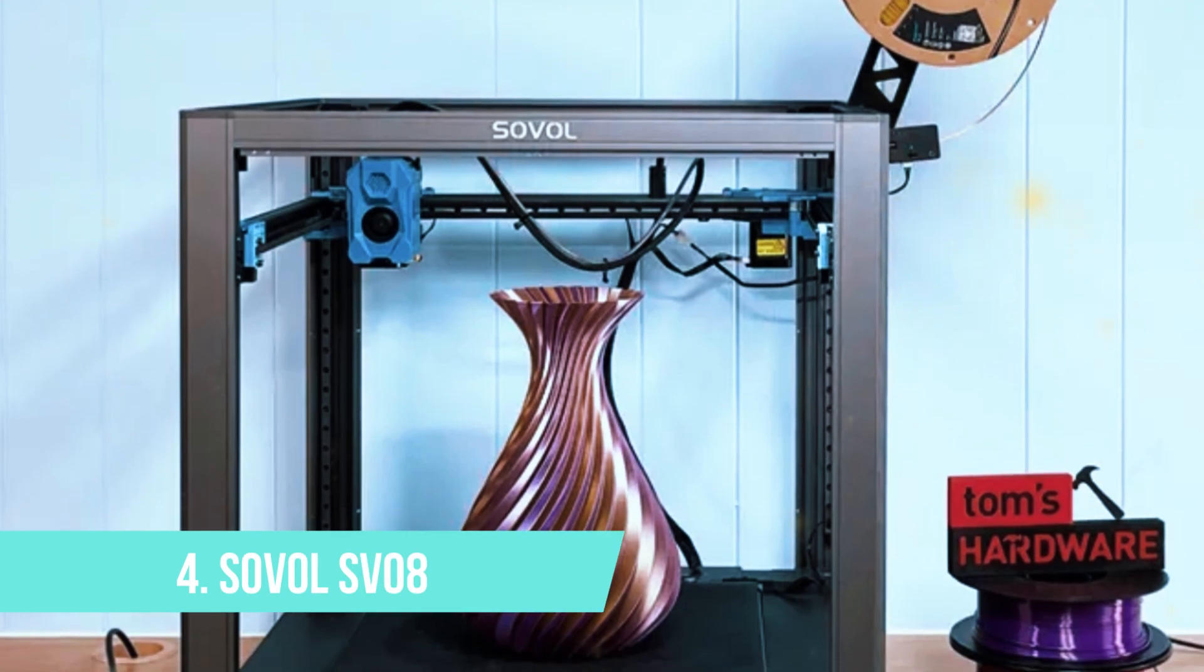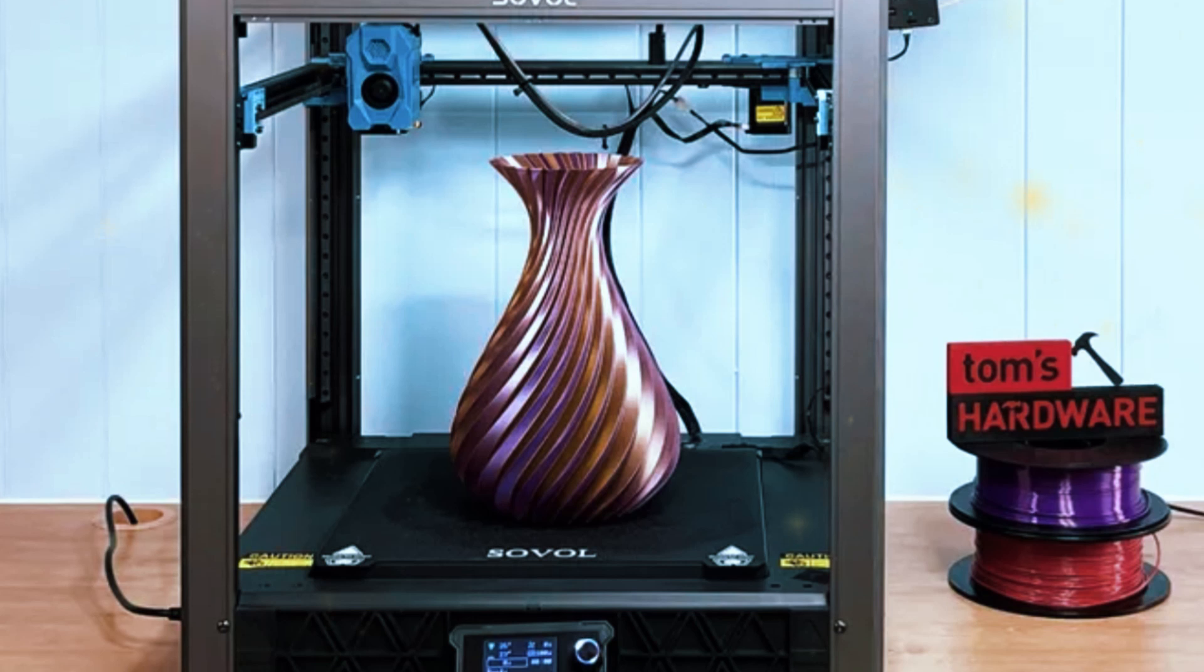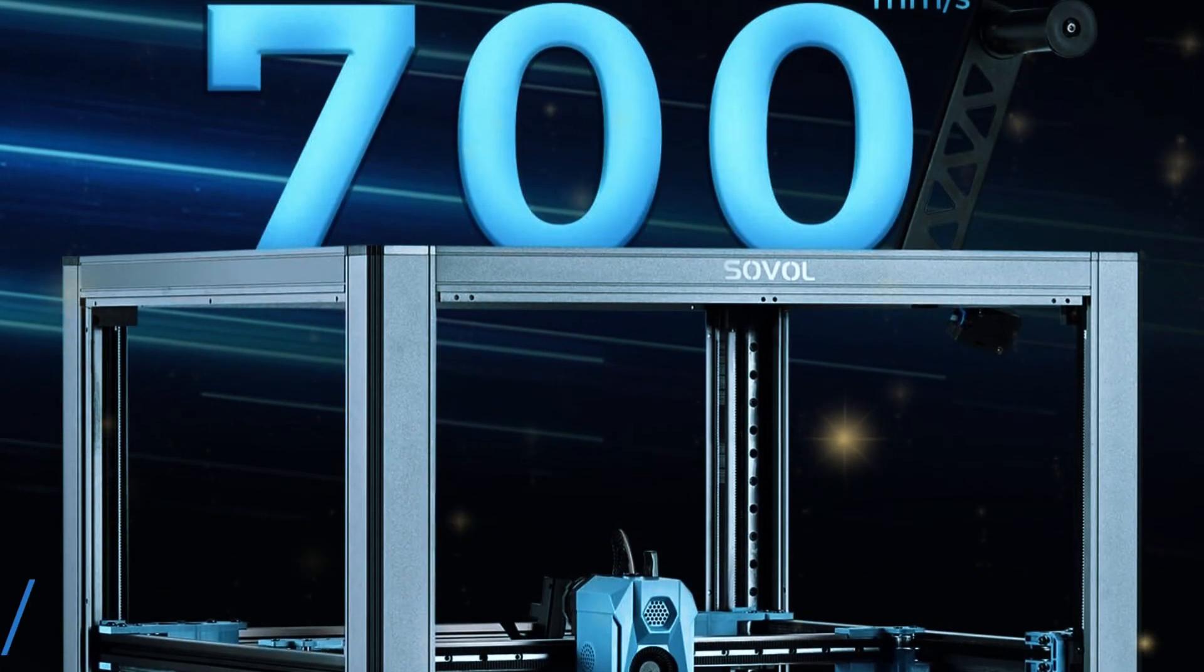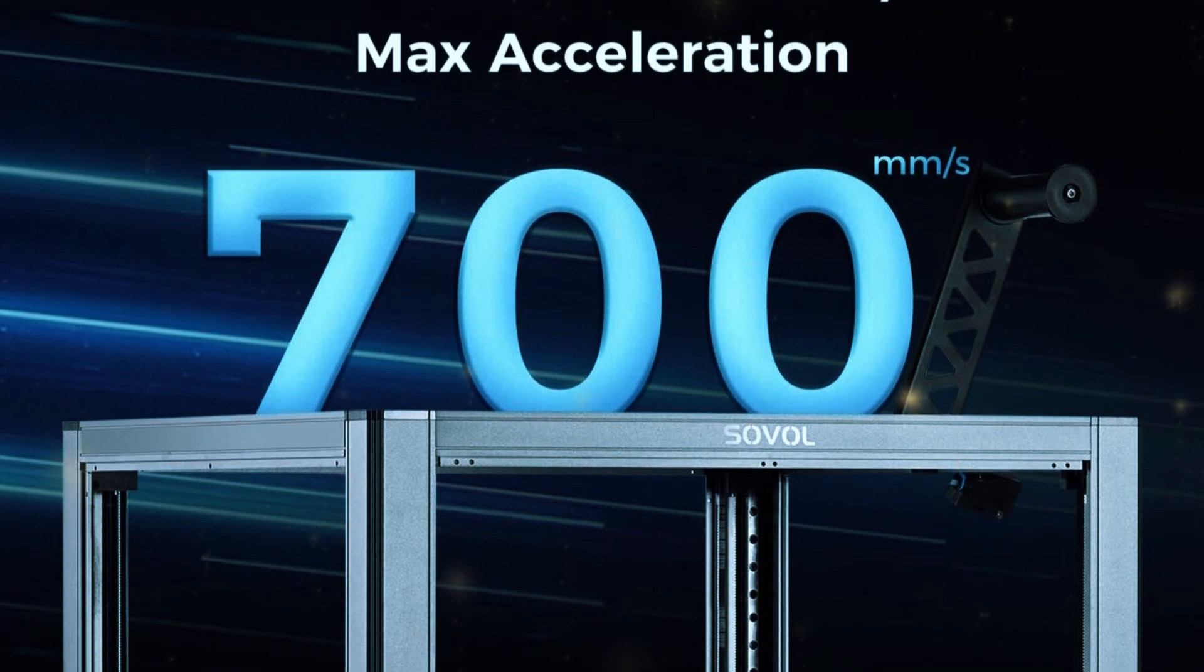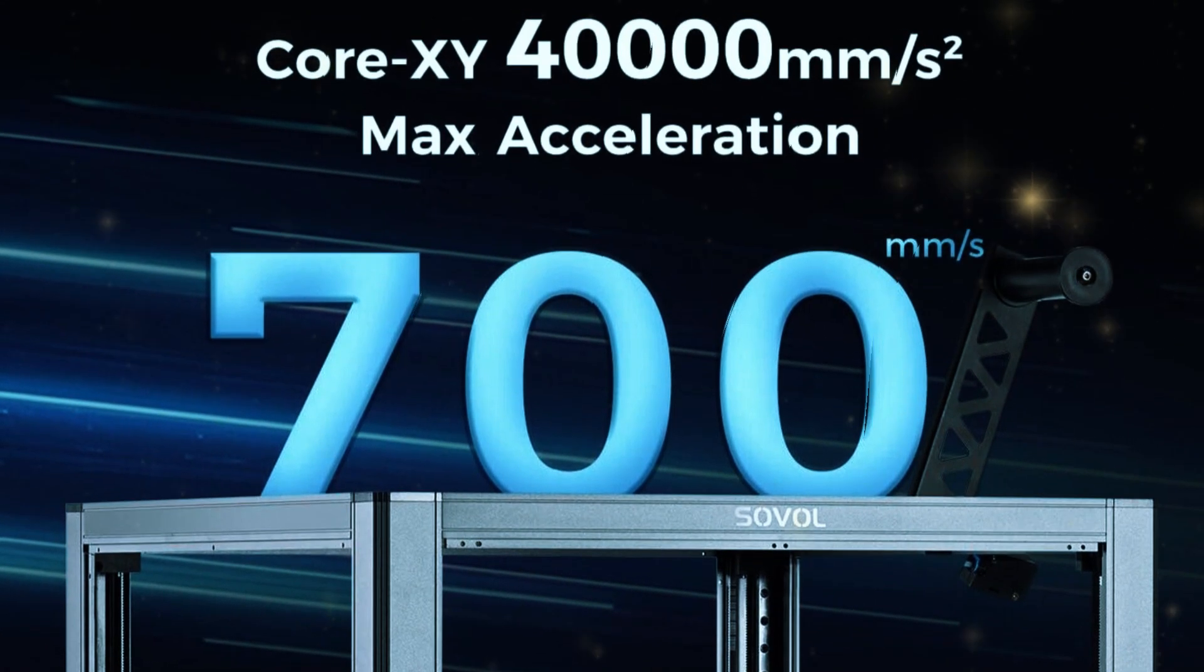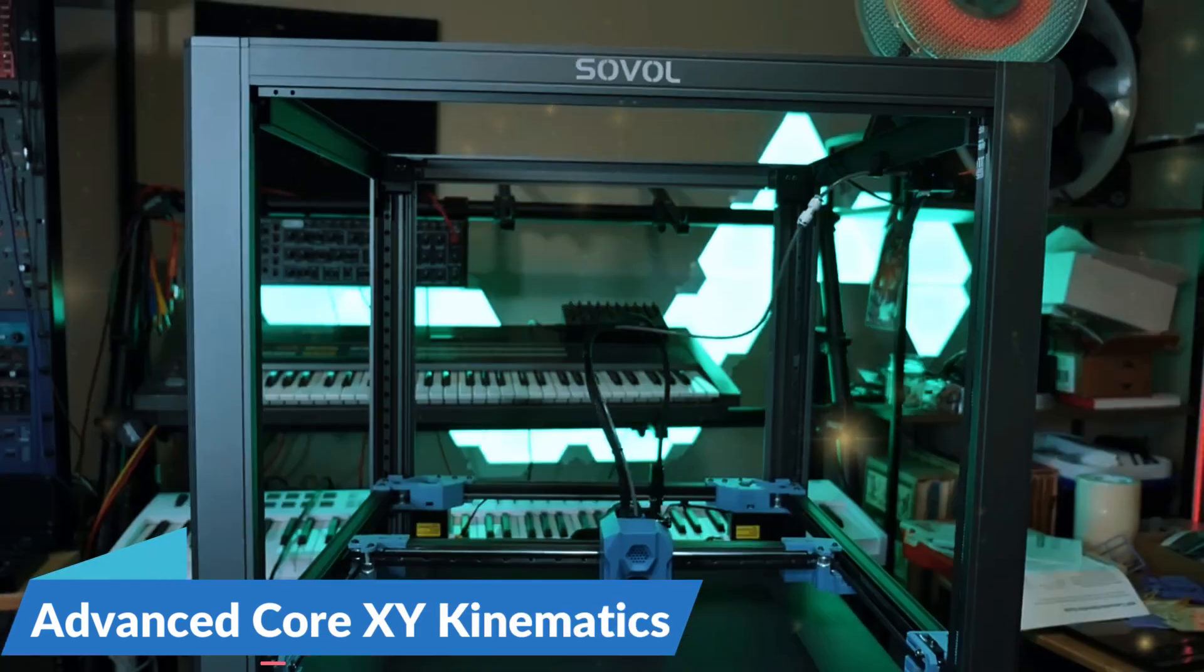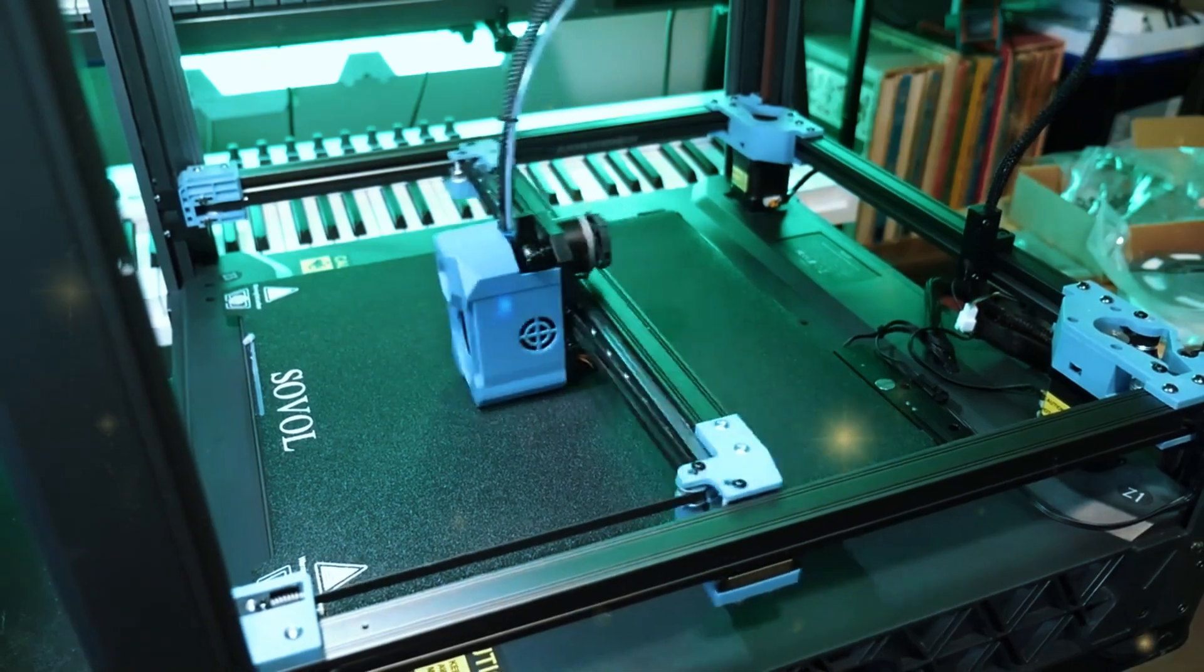Number 4: Sovel SV-08. Coming in next is the Sovel SV-08, a machine that redefines speed and precision for 3D printing. It can reach print speeds of up to 700 mm per second, which is incredibly fast compared to most other printers in its class. The SV-08 uses advanced core XY kinematics, which minimizes the weight of moving parts, leading to better control over motion and more accurate prints.